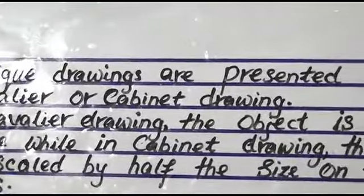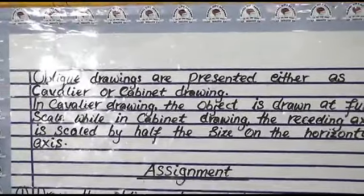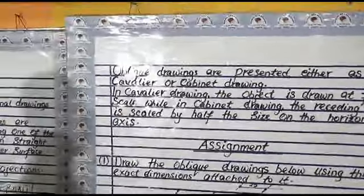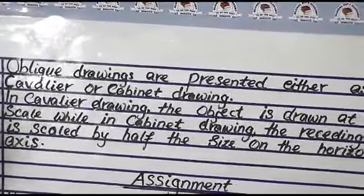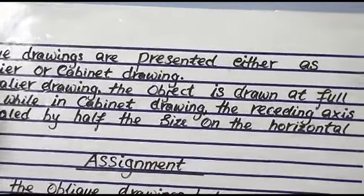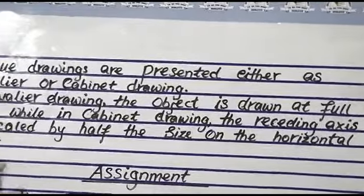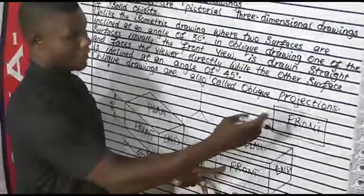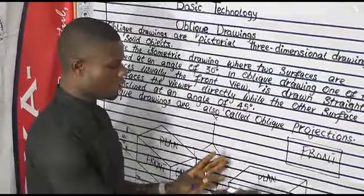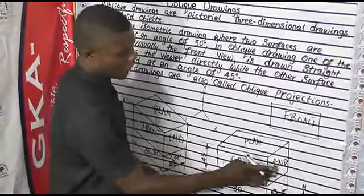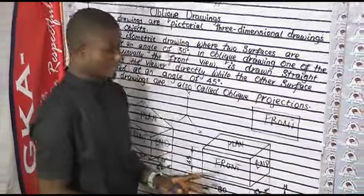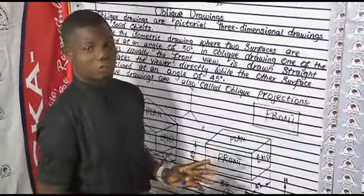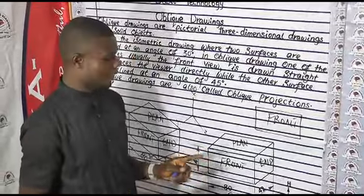Oblique drawings are presented either as a Cavalier or a Cabinet drawing — these are the two types of oblique drawing. In Cavalier drawing, the object is drawn at full scale. In Cabinet drawing, the receding axis is scaled by half the size of the horizontal axis. If you are drawing in Cavalier, you use the full scale — if the dimension is 80mm, you use 80mm; if the width is 42mm, you use 42mm. Nothing is subtracted and nothing is added.